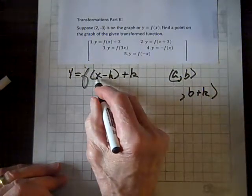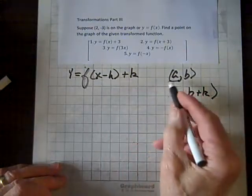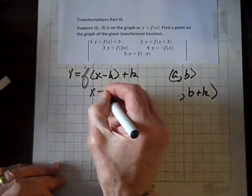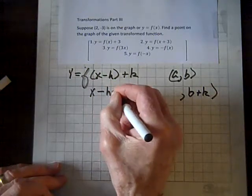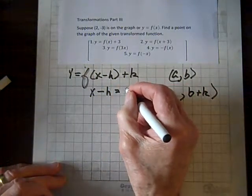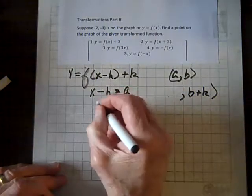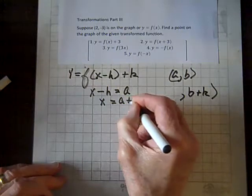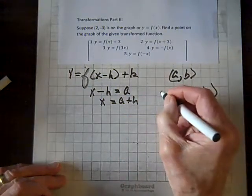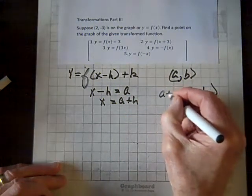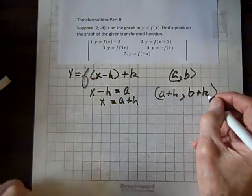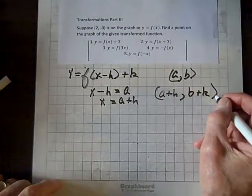The next thing, how does this x minus h impact this ordered pair? Well, to see that, you simply set x minus h equal to whatever the horizontal coordinate is, in this case a, and you solve for x. x equals a plus h. So, the new ordered pair is a plus h, and the y coordinate is going to be b plus k.